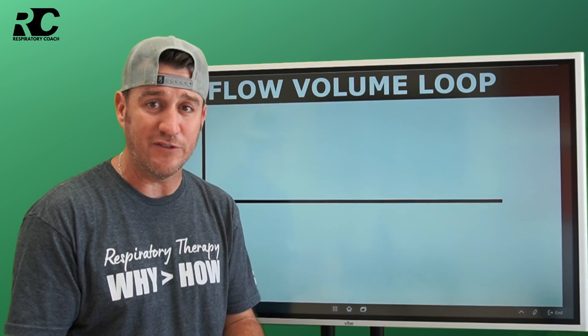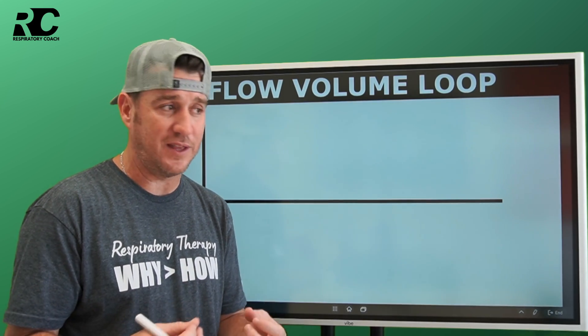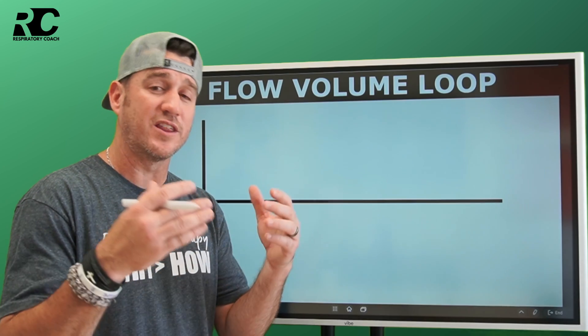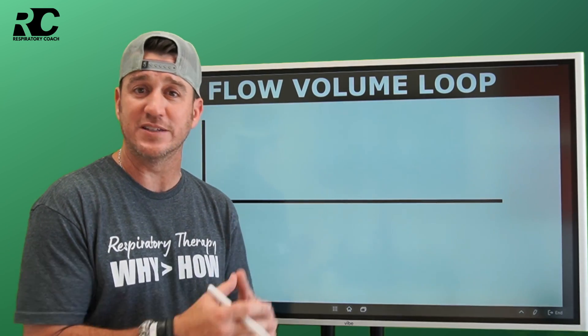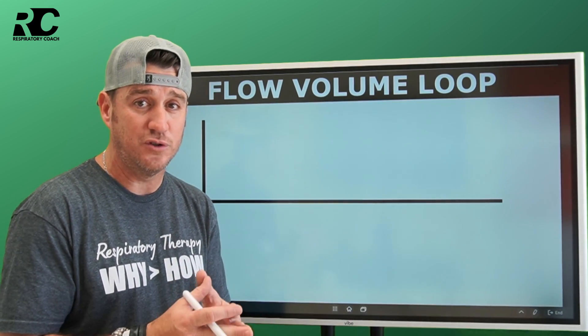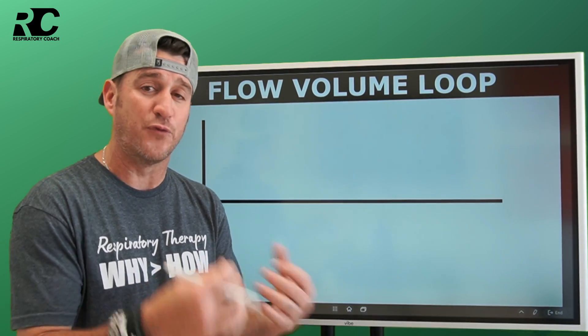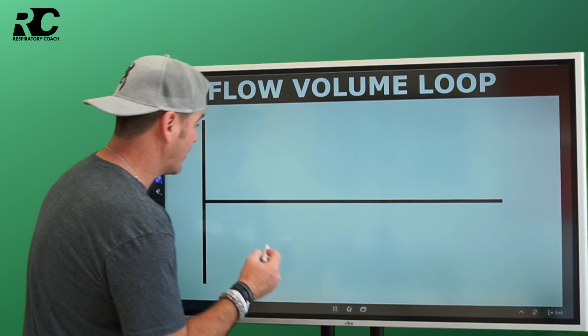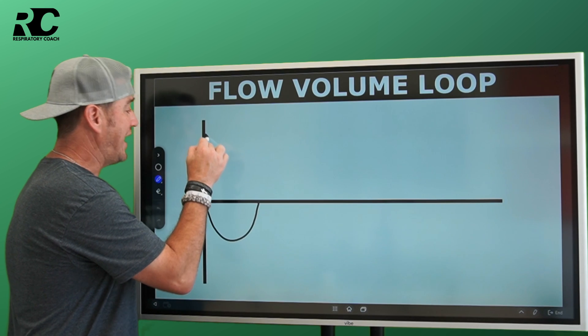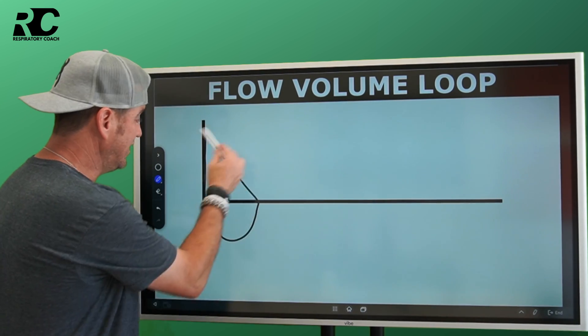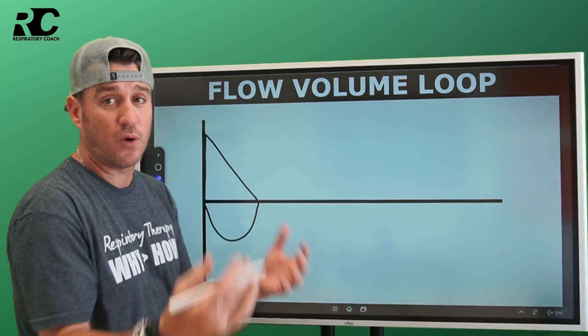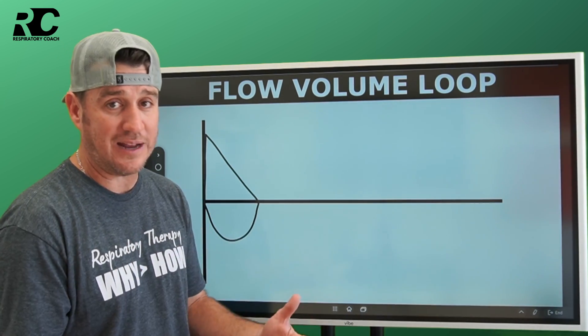Can you differentiate between normal, obstructive or restrictive? This is some basic TMC material that you're going to want to be able to pick up on. I'm going to draw normal for you first.